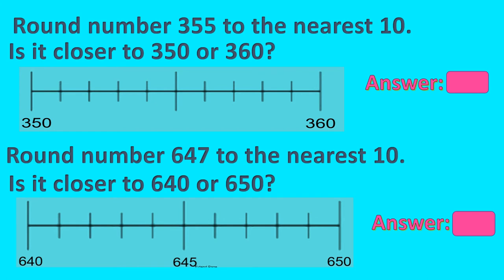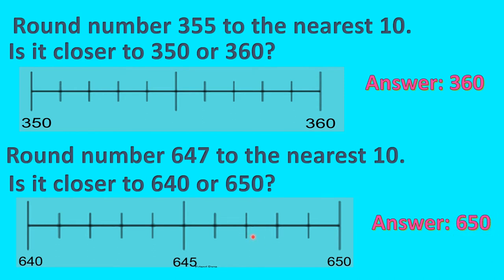Let's see this example, dear children. Round number three hundred and fifty-five to the nearest ten. Is it closer to three hundred and fifty or three hundred and sixty? Three hundred and fifty-five comes exactly in between three hundred and fifty and three hundred and sixty, so we round it to the higher ten, which is three sixty. Now let's go to the next example. Round number six hundred and forty-seven to the nearest ten — is it closer to six hundred and forty or six hundred and fifty? Six hundred and forty-seven is very much close to six hundred and fifty, so we round it to six hundred and fifty.